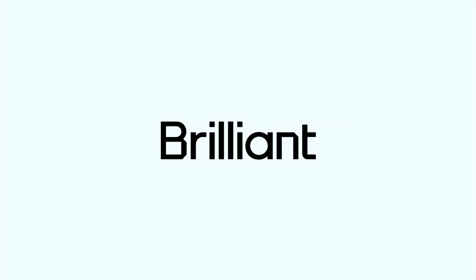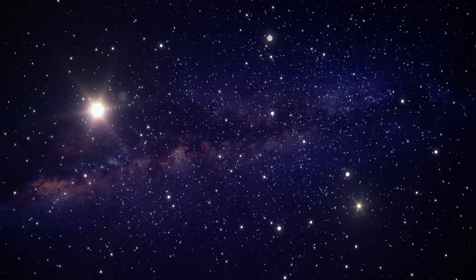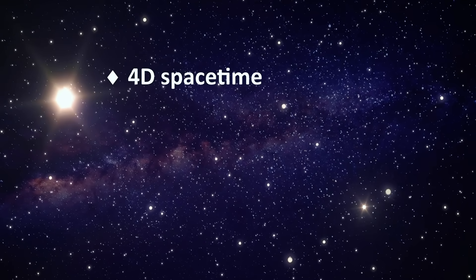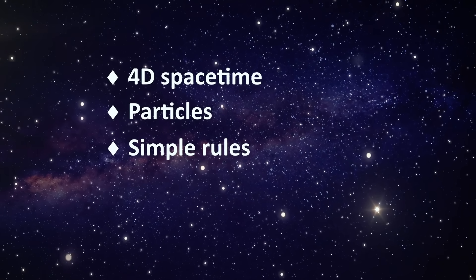This video is brought to you by Brilliant. Click the link in the description to take advantage of a special offer for Arvin Ash viewers. There are three main ingredients you need to make a universe like ours work: a 4D space-time, some particles with certain properties, and some simple rules.